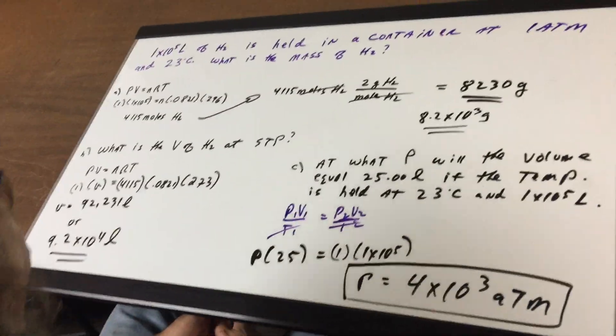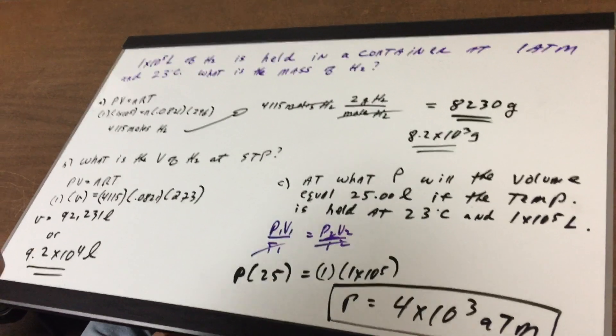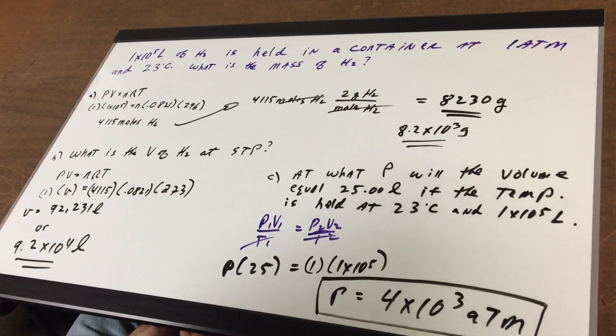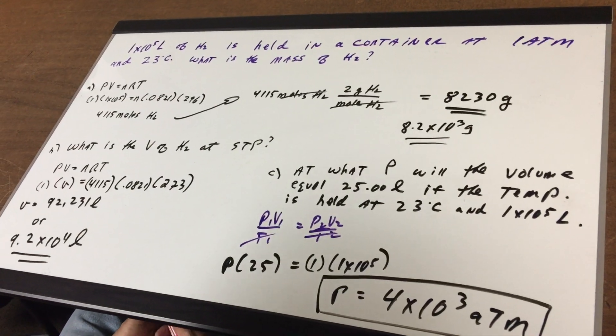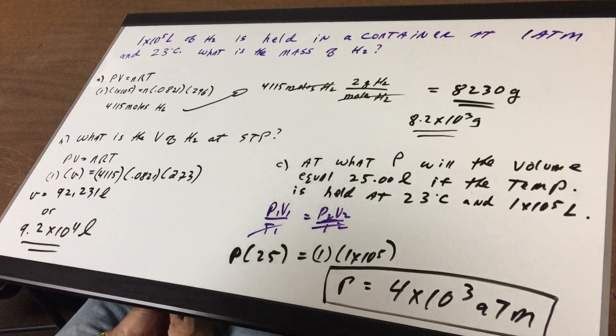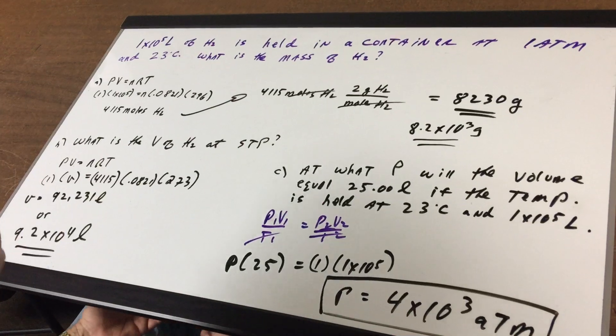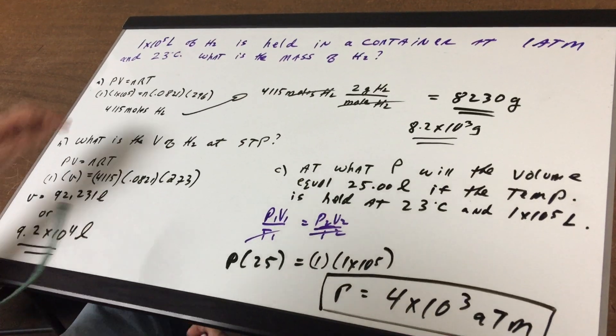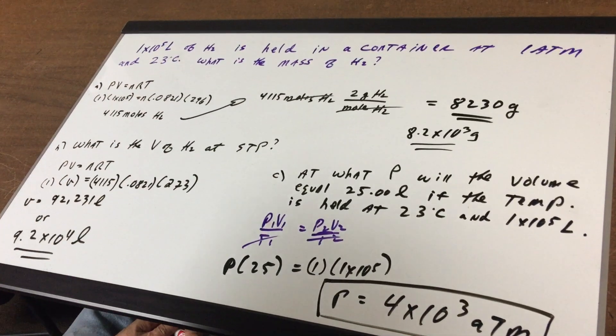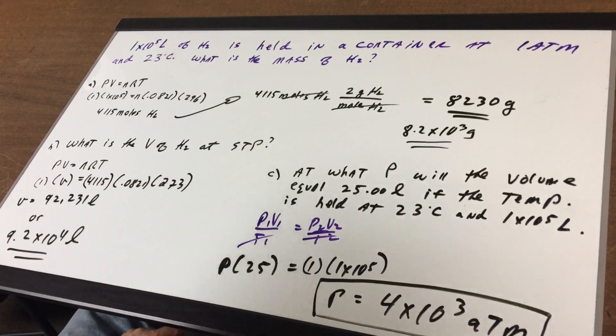I say to you we have 1 times 10 to the 5th liters of hydrogen and it is held in a container at 1 atmosphere and 23 Celsius. What is the mass of the hydrogen? The minute I hear the word gases and mass, the equation I'm going to most likely use is PV equals nRT.